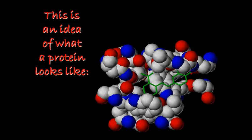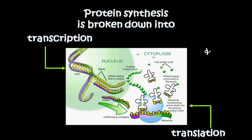Our body contains many different combinations of amino acids, and therefore we use many different proteins in our day-to-day activities. Protein synthesis is broken down into transcription and translation. Transcription is taking DNA and turning it into messenger RNA, which carries the message of the double-stranded DNA out of the nucleus into the cytoplasm where a ribosome can attach to it. Translation is taking the messenger RNA message and making a polypeptide or protein chain out of it.